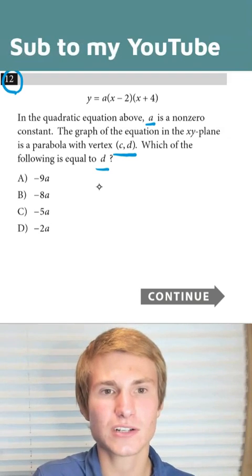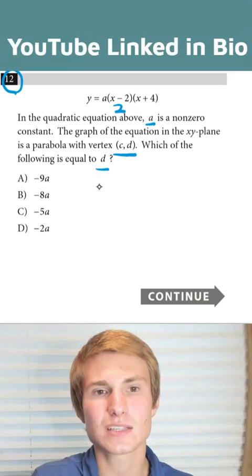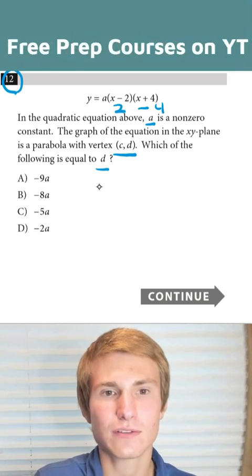Since I have x minus 2 as a factor, I know I'll have one zero at 2. And since I have x plus 4 as a factor, I'm going to have another zero at negative 4.